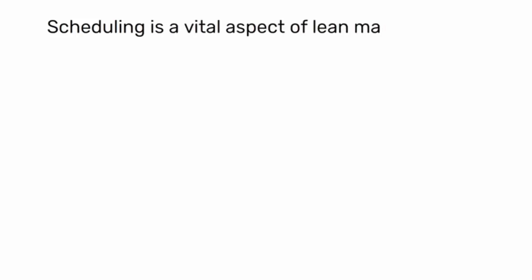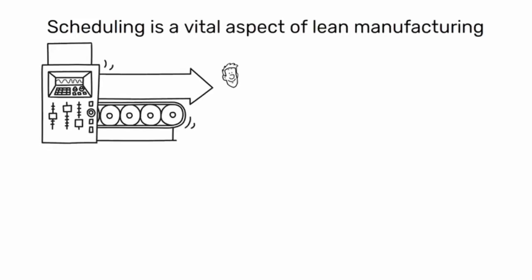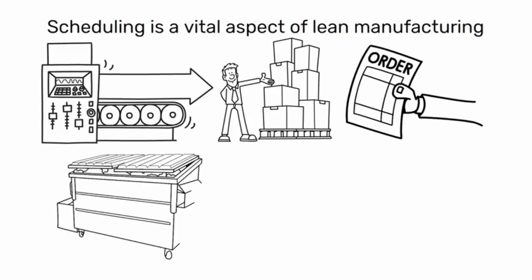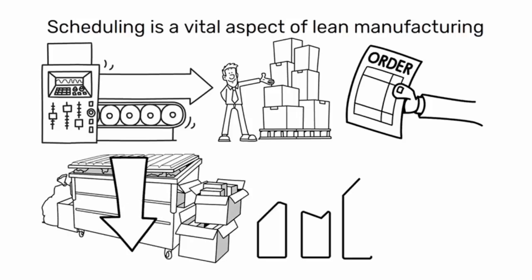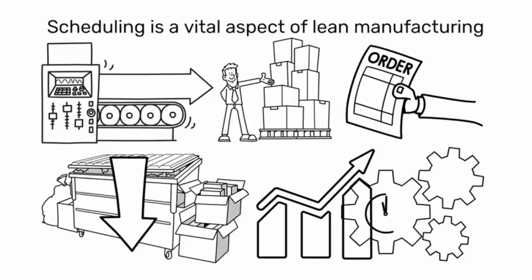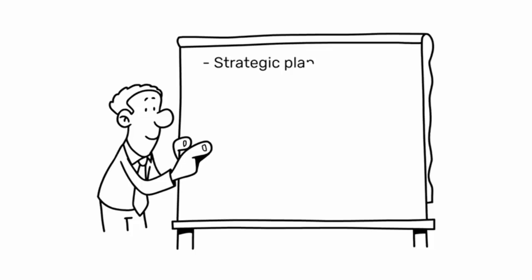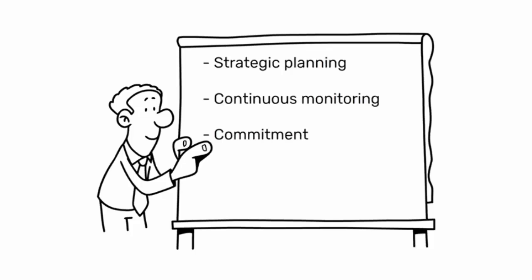In summary, scheduling is a vital aspect of lean manufacturing that helps to align production with customer demand, reduce waste, and improve efficiency. It requires strategic planning, continuous monitoring, and a commitment to continuous improvement.